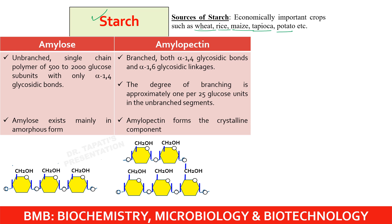Starch is usually composed of two types of molecules, namely amylose and amylopectin. They both consist of polymers of alpha-D-glucose units in their chair conformation. That means the basic unit of both amylose and amylopectin is alpha-D-glucose.